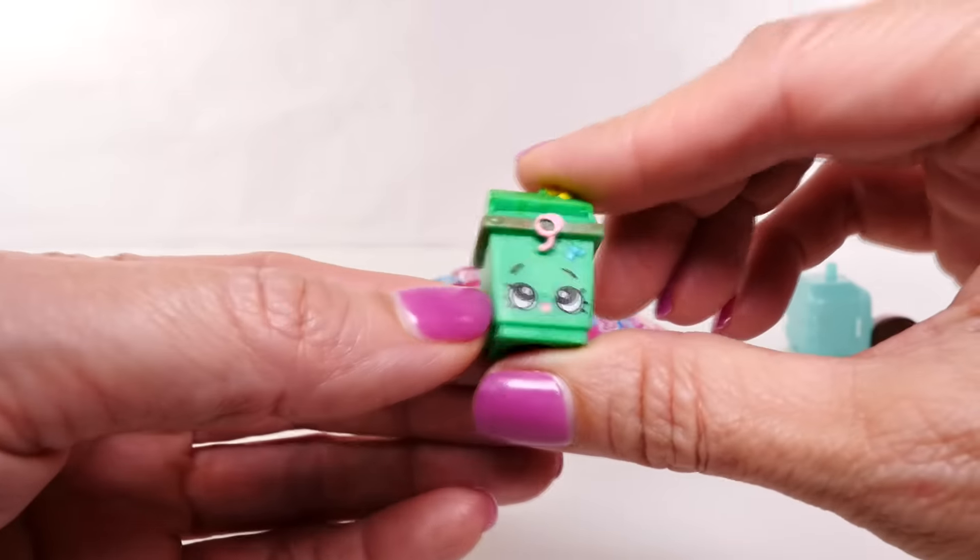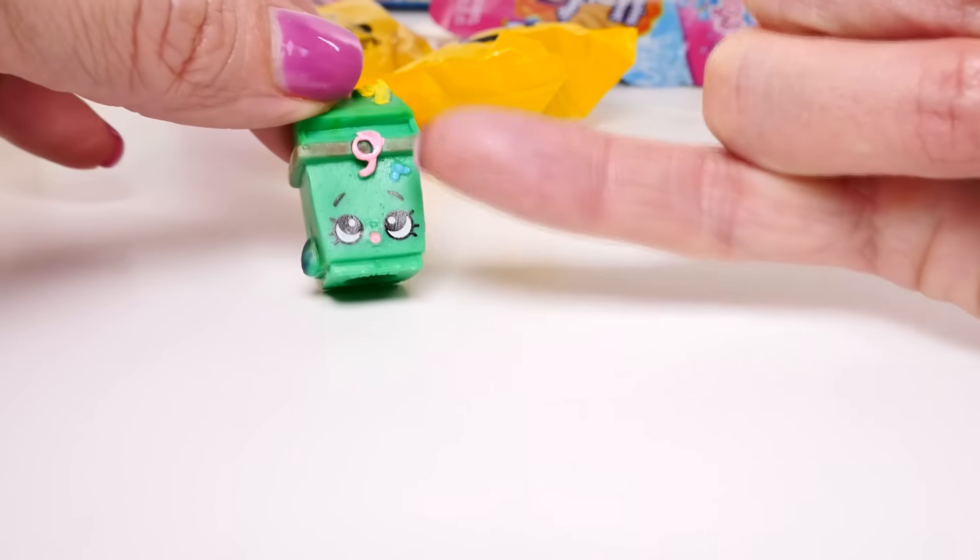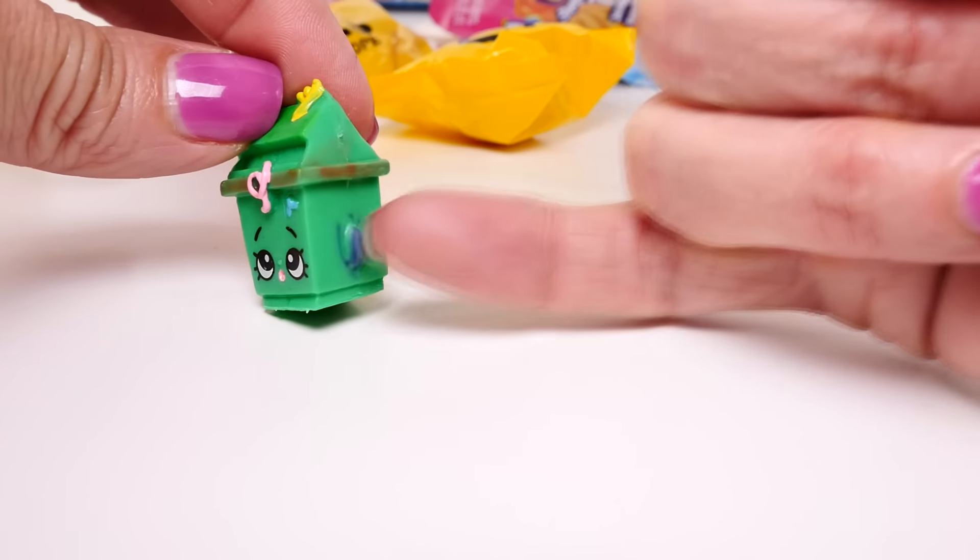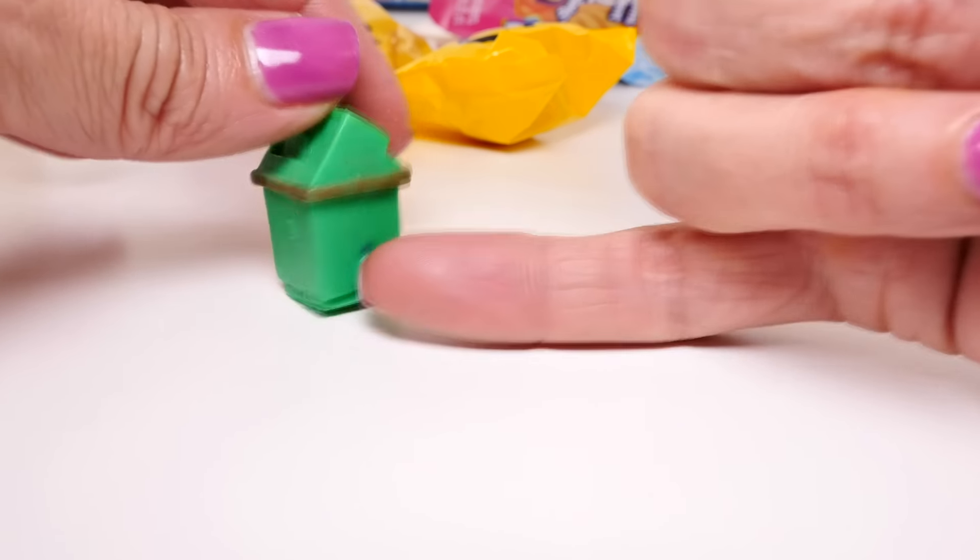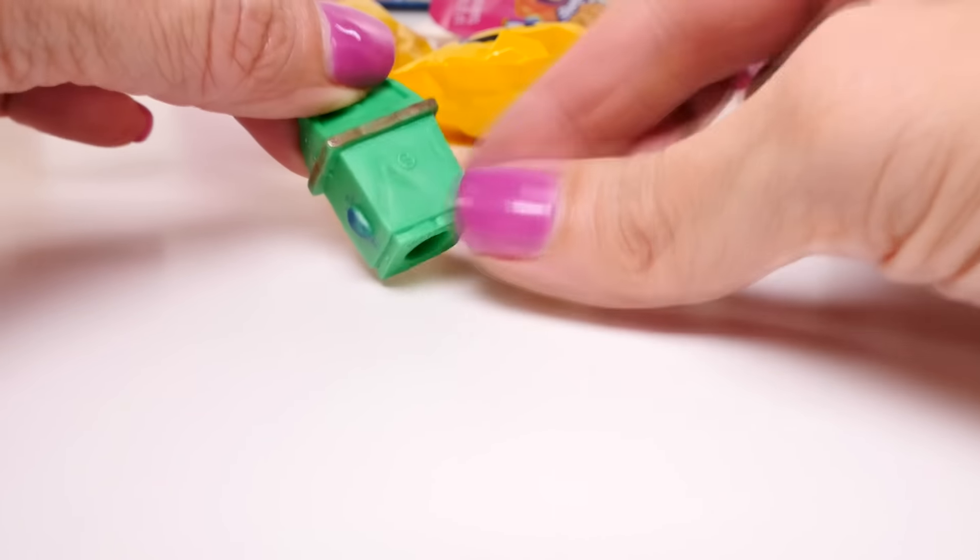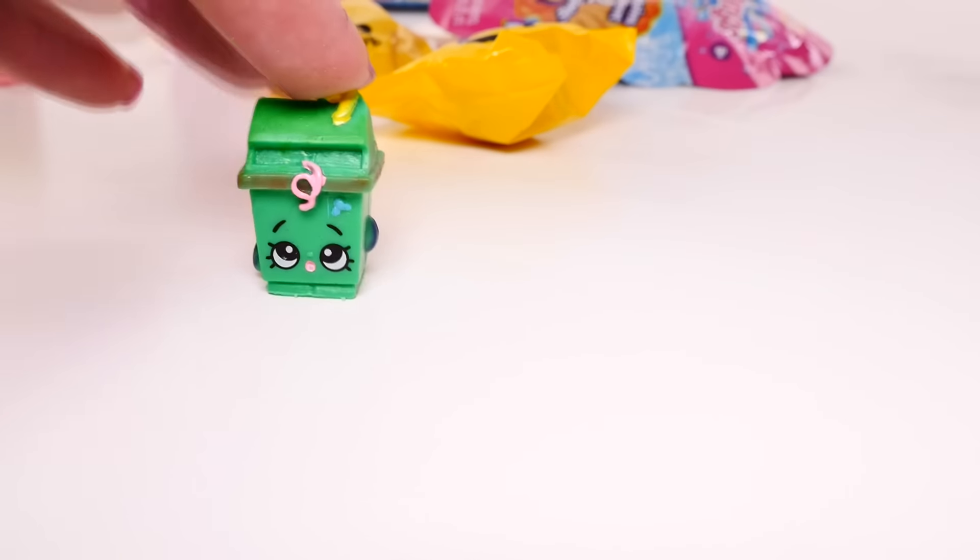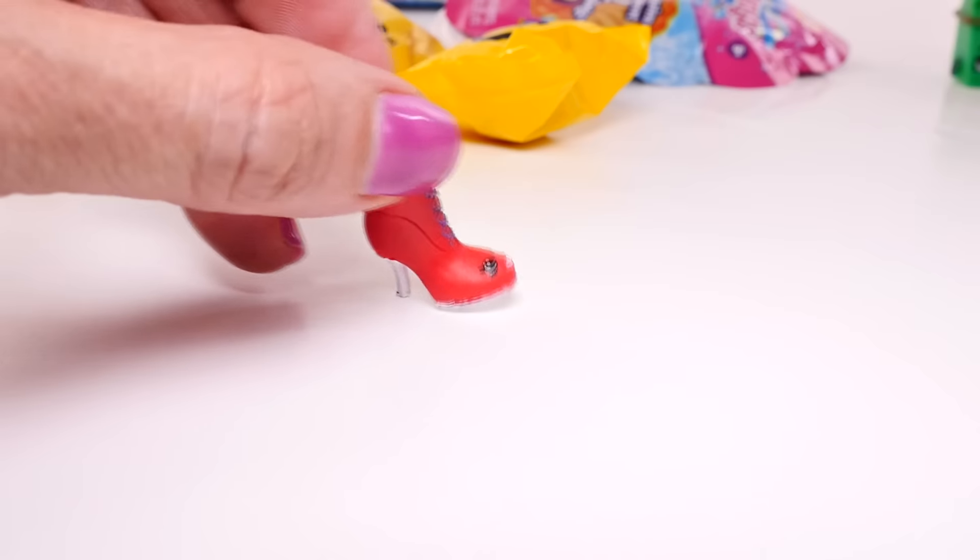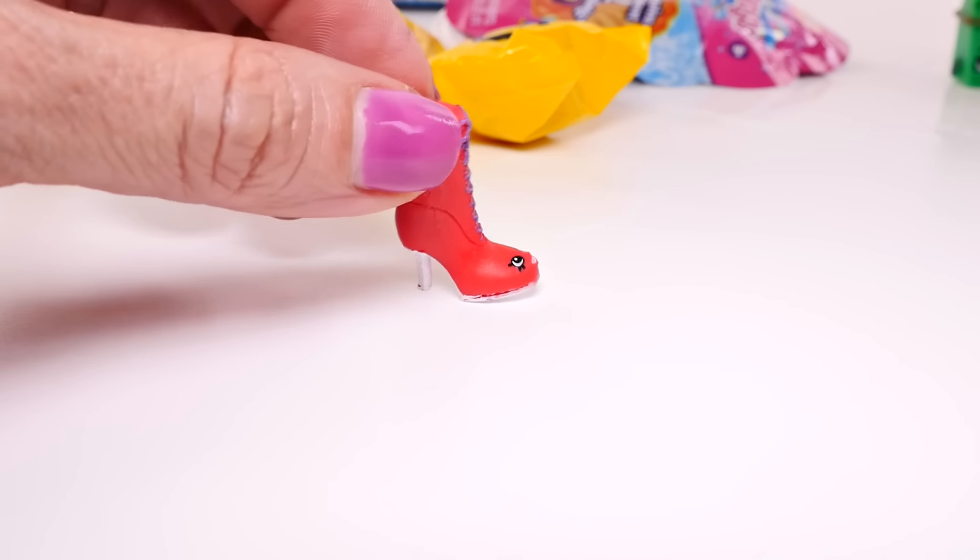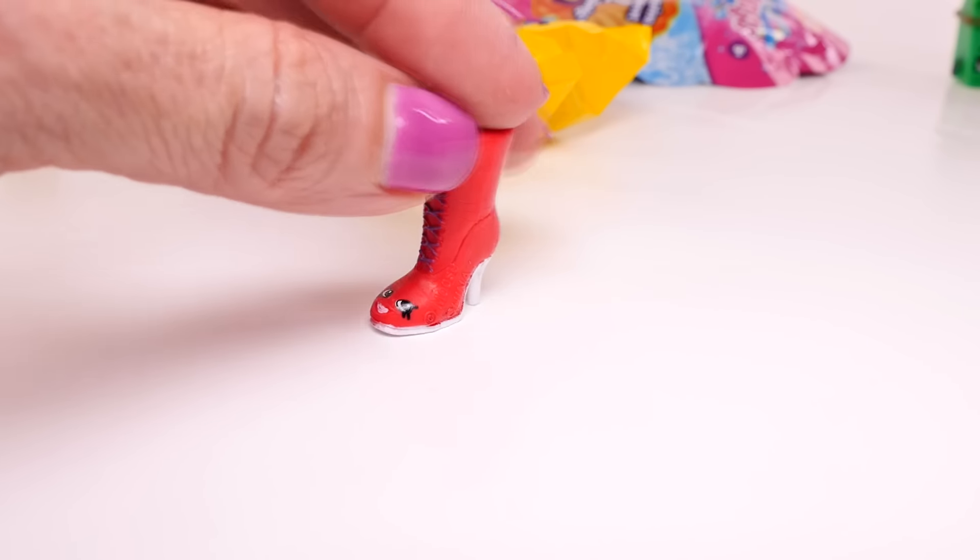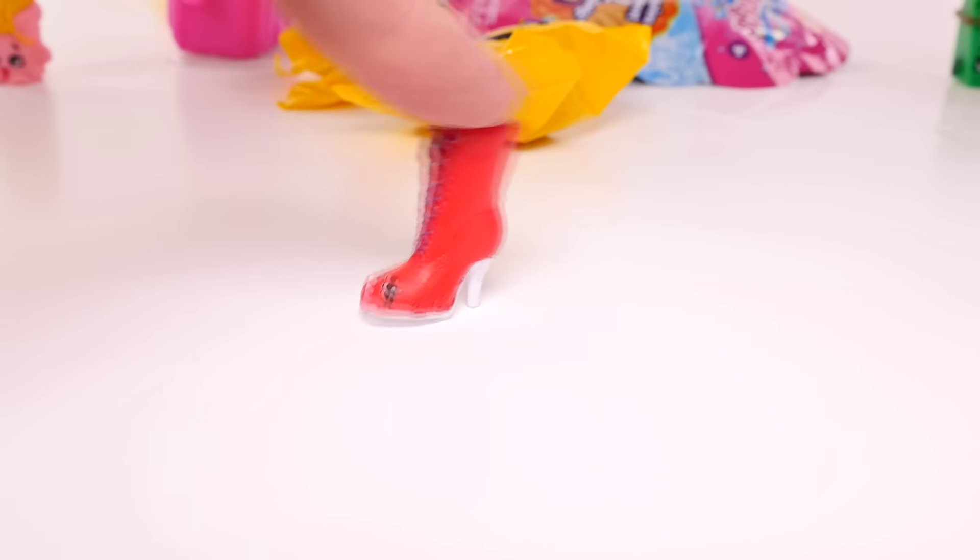It looks like the dye in the jello might have rubbed off onto this one, see that? I don't think it was like that before, I don't know maybe it's from the jello. Here's Lizzy Lace-up obviously from the shoe department, season three. Look, it looks like she's tapping her toe.